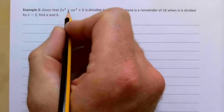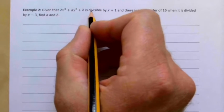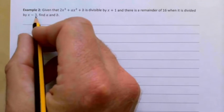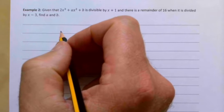Given that 2x³ + ax² + b is divisible by x + 1, and there is a remainder of 16 when it is divided by x - 3, find a and b.